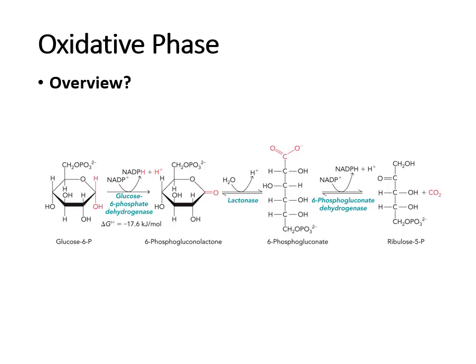Looking at the two phases within the pentose phosphate pathway: the oxidative phase generates NADPH — circle, star, highlight that. It's the conversion of glucose 6-phosphate to ribulose 5-phosphate. Notice that's ribulose 5-phosphate, not ribose 5-phosphate yet. That will occur later, so this is the end product of the oxidative phase that still needs further conversion.